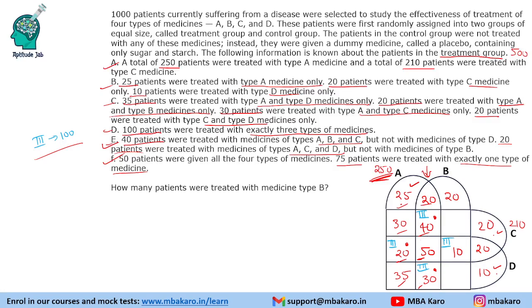Using the total of C = 210: adding 30, 20, 50, 40 gives 140; plus 50 is 190; so the B&C&D-not-A region is 20. For the remaining B-only region: there are 500 total treated patients. A is already 250. The remaining regions outside A — 20, 20, 10, 50 — sum to 300; then 300 plus 50 is 350; so the B-only value shall be 150.